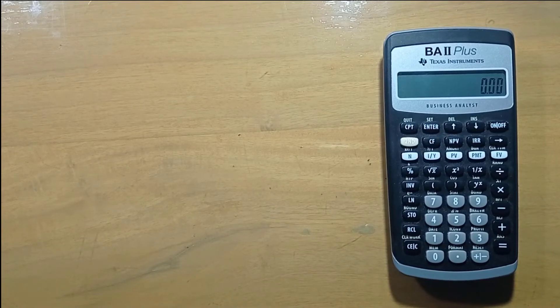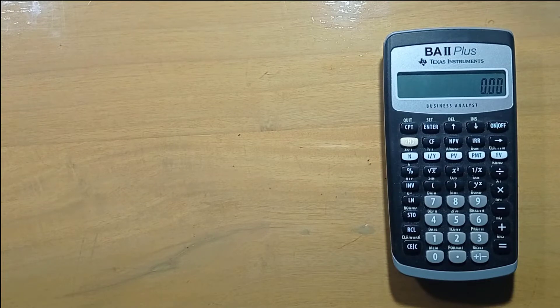Today I'll show you floating decimal in TI BA2 plus calculator. In floating decimal mode, the calculator will show the number of digits after the decimal point according to the need.